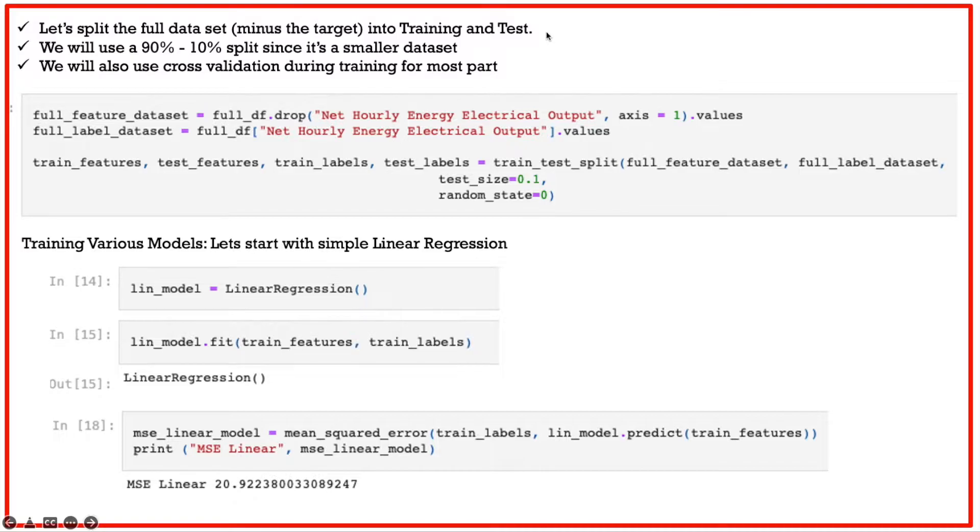The next step that we have to do is split our data set. Because our data set is kind of small, we will use a 10% to 90% split meaning we are going to use 90% of our data for training and 10% for testing. All right, so let's prepare our data set.